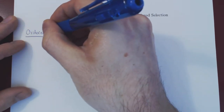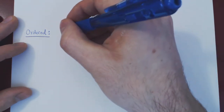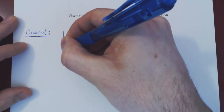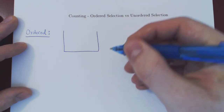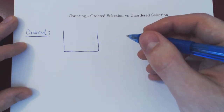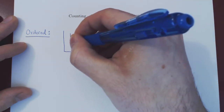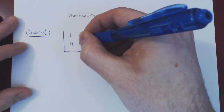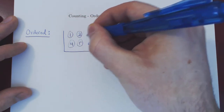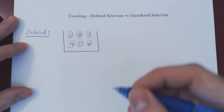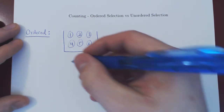Let's start with an ordered selection. Suppose you have an urn or a box where you have six balls numbered from one to six. So you have these six balls in the box. Suppose you close your eyes and you select three balls at random.